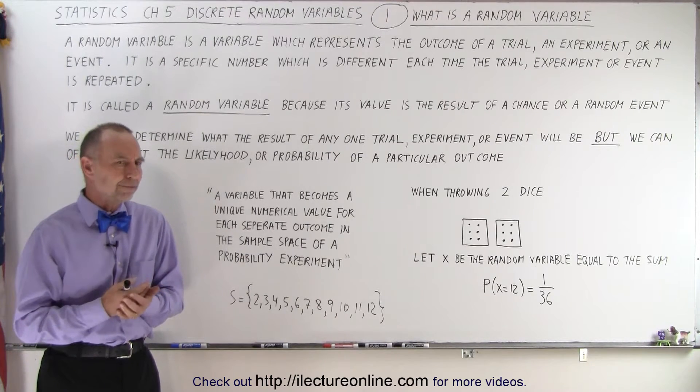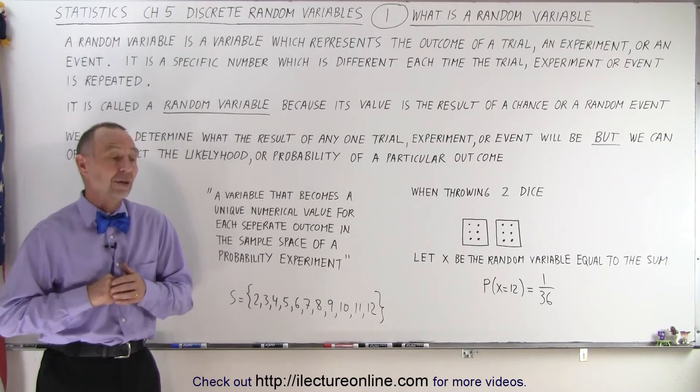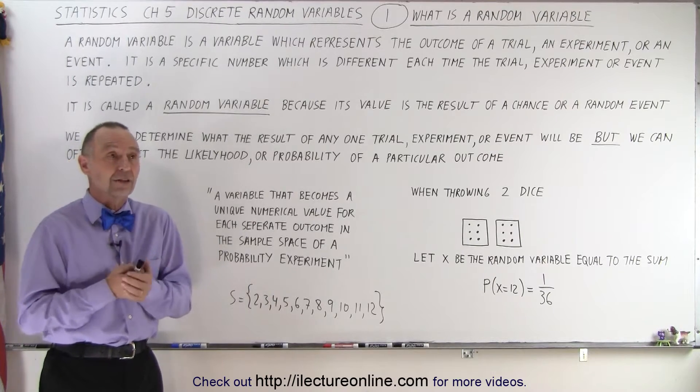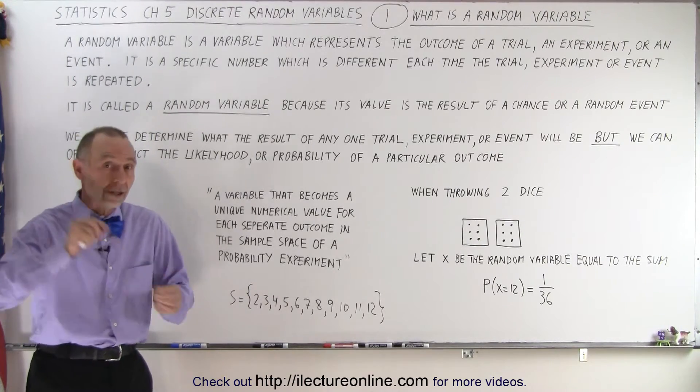Aren't all variables random? That's not necessarily the case because if a variable is a representative, let's say representative of a point on a line,